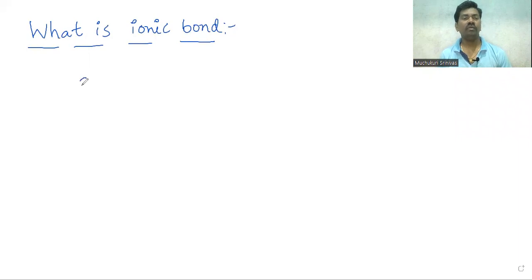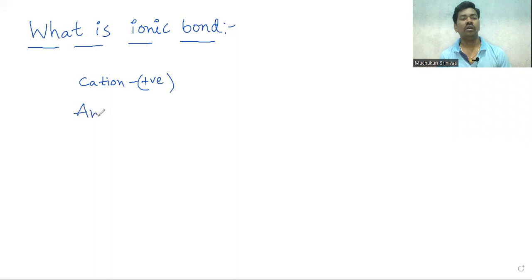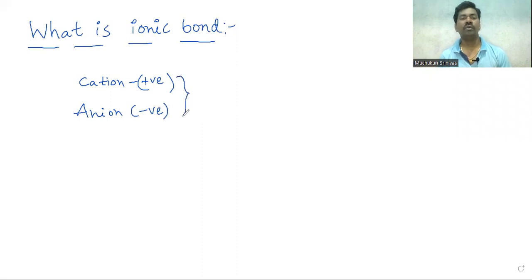What is a cation? A cation is nothing but a positively charged particle. And an anion is a negatively charged particle. Whenever there is an attraction force between these two oppositely charged species, then bond formation takes place. That bond is called ionic bond.